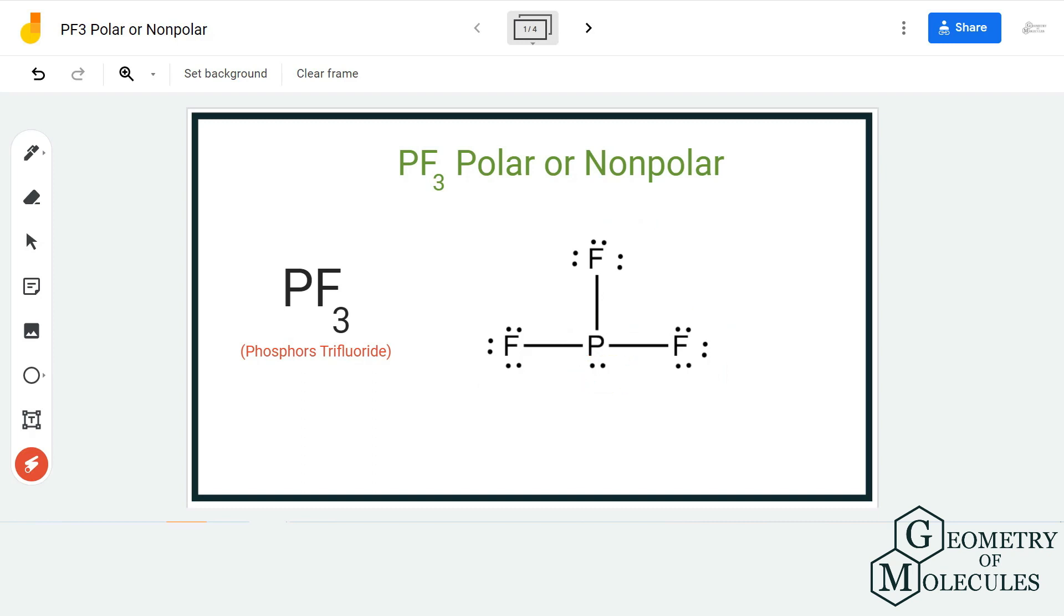Now because of this lone pair, this molecule is no longer symmetrical and there are chances that this molecule is a polar molecule. But let's confirm it by looking at electronegativity values of phosphorus and fluorine and find out if there is a net dipole moment in this molecule.